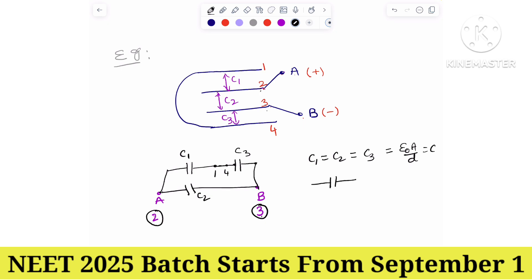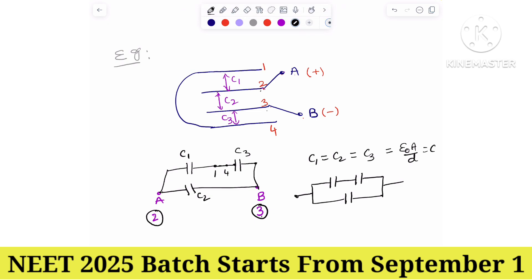Now, two capacitors of equal capacitance are joined in series, and one is joined in parallel with them. We can find the effective capacitance across A and B very easily. This is one simple method.